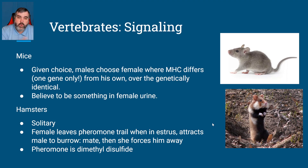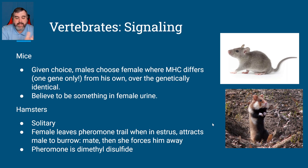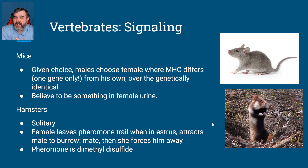Mice are given a choice in a Y-maze — this or that. They put a female mouse that's genetically identical to the male alongside one that's different. The male will pick the one that's not genetically identical. It's believed that female urine is involved in recognizing MHC. Only one gene needs to be different, and the male will choose that one over the genetically identical option.